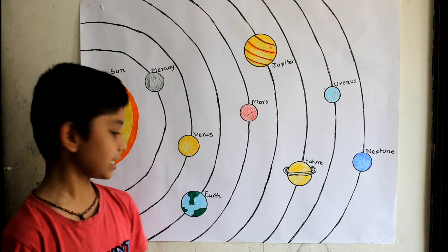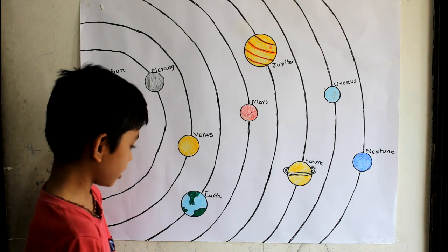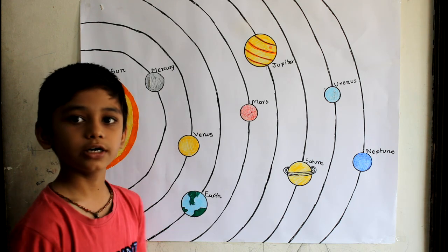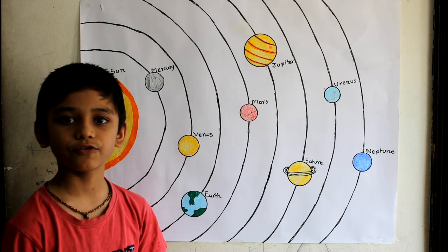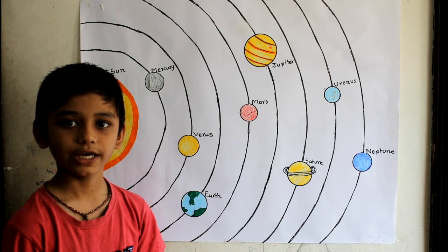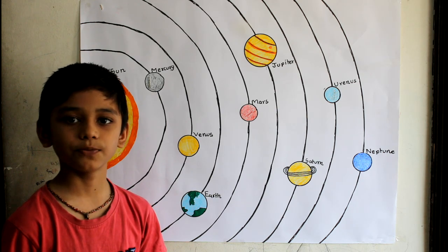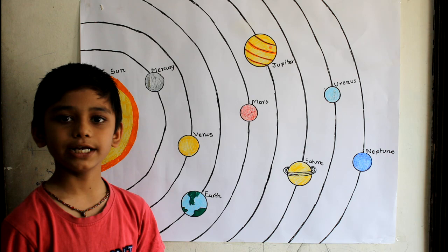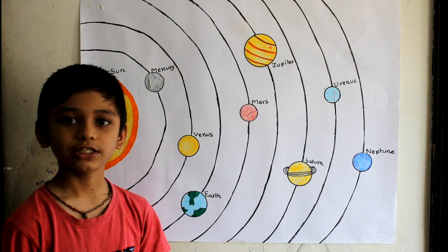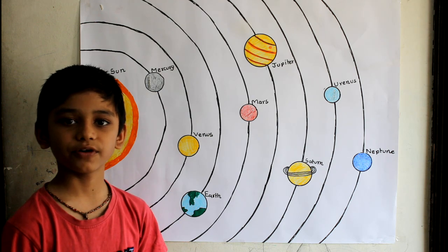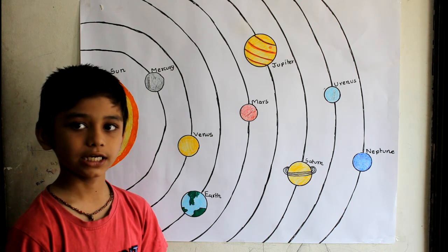Now let us see about the Earth. The Earth is the only planet which has life. It has one moon and it takes one revolution in 365.25 days.